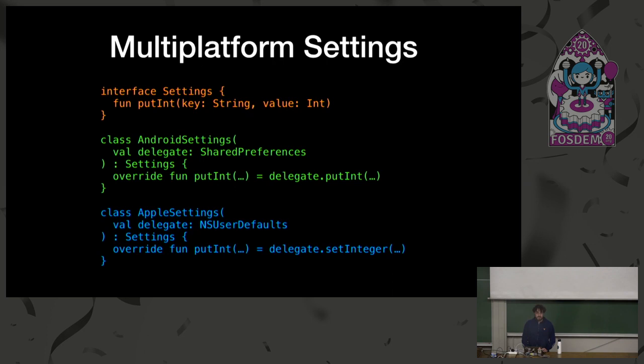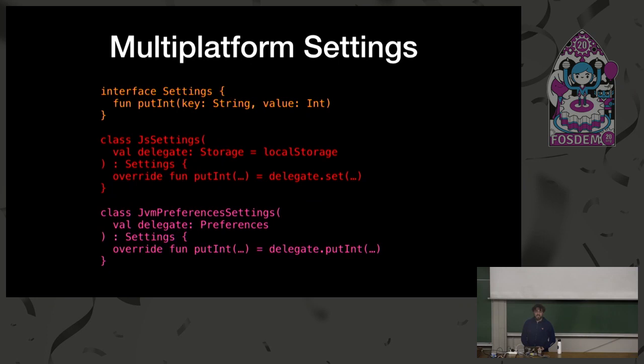Let's take a quick walk through the structure of the library. The core is an interface called Settings, with getters and setters for different data types. It has different implementations on each platform: AndroidSettings wraps the typical Android key-value API called SharedPreferences; AppleSettings wraps the UserDefaults API, which is essentially the equivalent on iOS. Over time I've added more platforms — JSSettings wraps local storage in JavaScript, and there are pure JVM implementations including one that wraps the Java Preferences API.